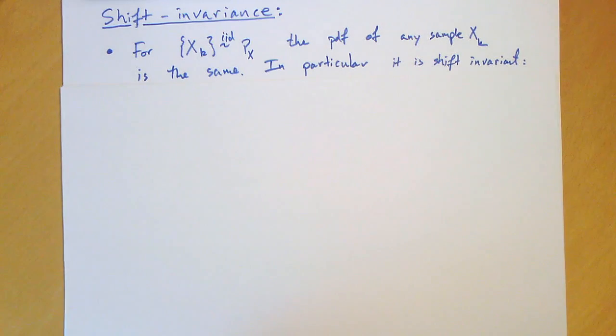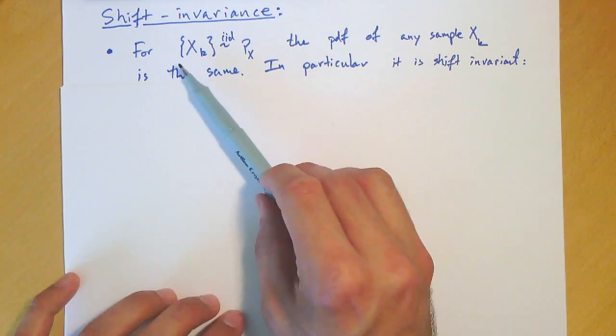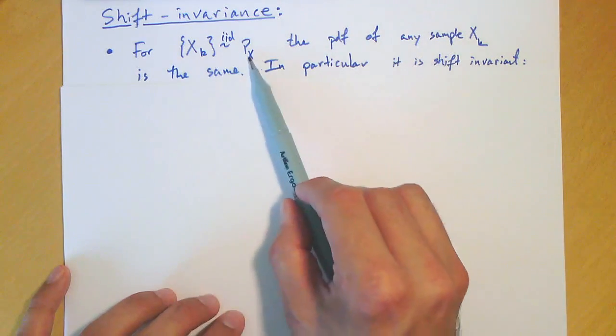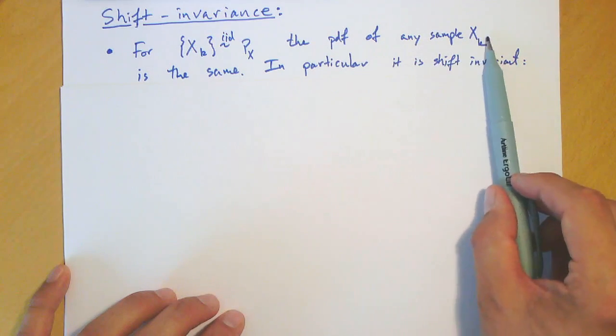One important feature of IID processes is that they are shift invariant. This means that no matter how you shift the time back and forth, the probability distributions are the same. And this actually implies that for this IID process X here, the PDF of any sample, XK, is the same.